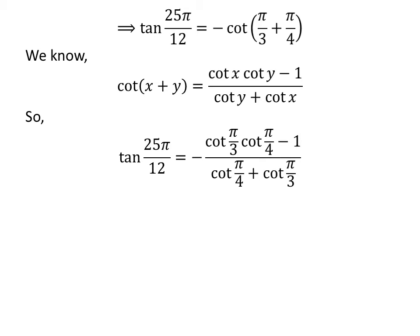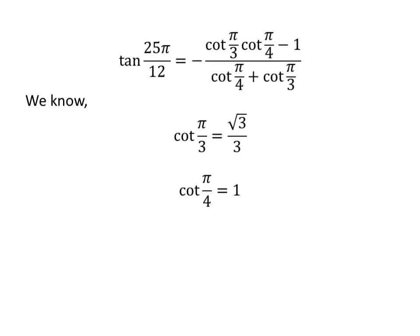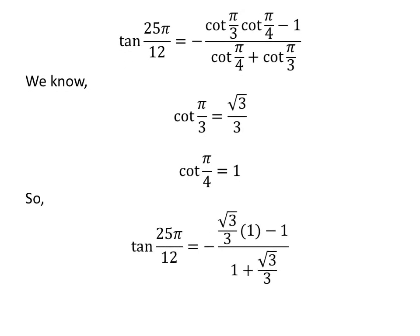Application of the above identity gives us tangent of 25 times pi upon 12 is equal to minus of cotangent of pi upon 3 times cotangent of pi upon 4 minus 1 upon cotangent of pi upon 4 plus cotangent of pi upon 3. We know cotangent of pi upon 3 is equal to square root of 3 upon 3 and cotangent of pi upon 4 is equal to 1. So we plug in these values to get minus of square root of 3 upon 3 times 1 minus 1 upon 1 plus square root of 3 upon 3.